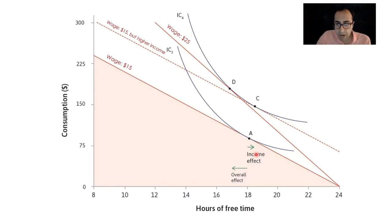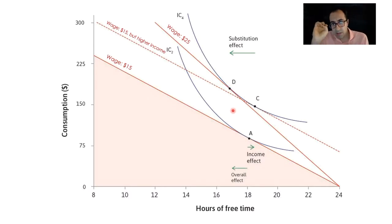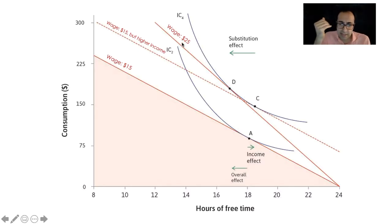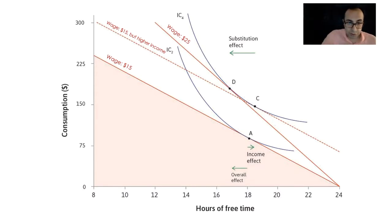After isolating the income effect, whatever remains must be the substitution effect. The substitution effect tells us that Sarah decided to work more and decrease her hours of free time, because the opportunity cost of having free time went up for Sarah after her wage increase. As I said from the beginning, the substitution effect dominated the income effect for Sarah, and overall she decided to work more after getting a promotion from Financial Times.